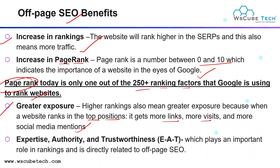With the help of page rank you can also improve your page quality. For page quality, we have the EAT model: Expertise — that you are expert in a particular field and that's why you are providing that content; Authority — that you have authority to write that content; and Trustworthiness — that your site is secure. This plays an important role in ranking and is directly related to off-page SEO.